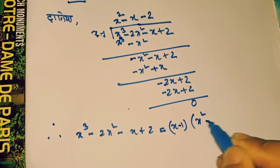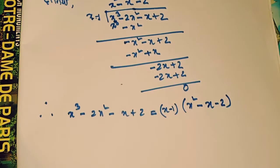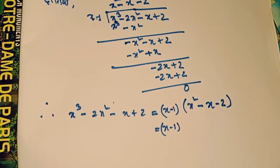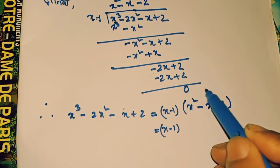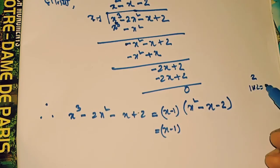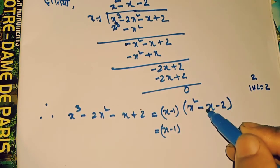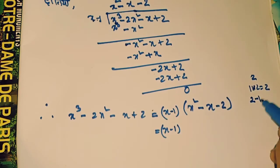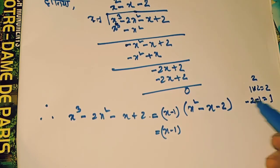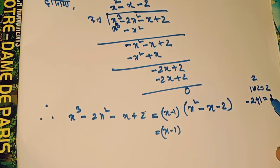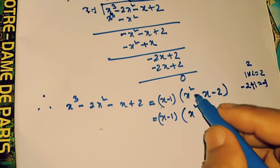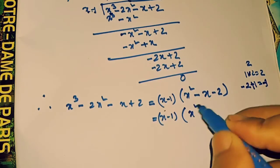The second expression is x squared minus x minus 2. This is x minus 1. This is the 3rd. The 2nd is 2. This is 1 into 2. This is 2. This is minus 1. This is 2. This is minus 1. Plus or minus 1, we will get x squared. Here we will get x squared minus 2.